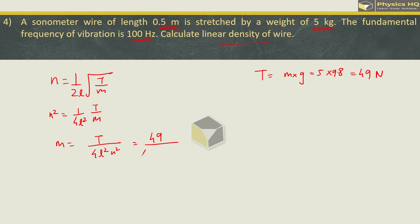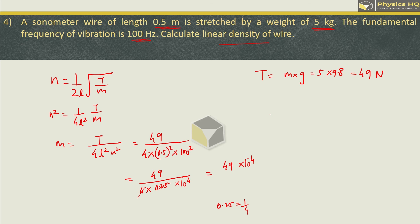The tension will be mass into g. Mass is 5, g is 9.8, so tension will be 49 N. This will be 49 divided by 4 into 0.5 square into 100 square. This will be 49 divided by 4 into 0.25 into 10 raise to 4. Linear density of wire is 4.9 into 10 raise to minus 3 kg per meter.